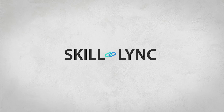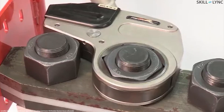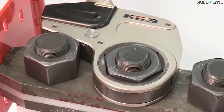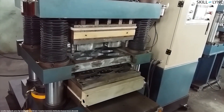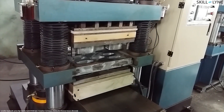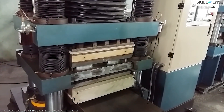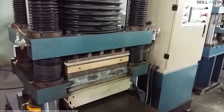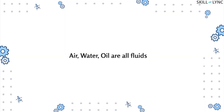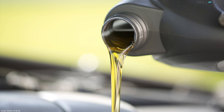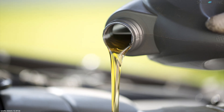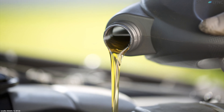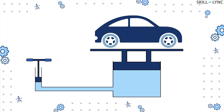Hey guys, welcome to Skill Link. A lot of the equipment used in industries requires some kind of movement to perform certain work. This movement is generally achieved by a hydraulic system that uses fluid to transfer power rapidly and effectively. Air, water, and oil can be considered as fluids, but today's power systems generally use oil as a hydraulic working fluid due to certain advantages over other types of fluid.